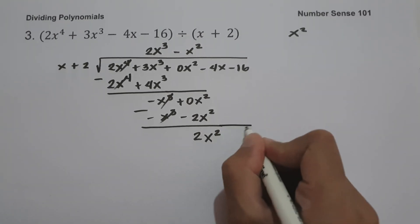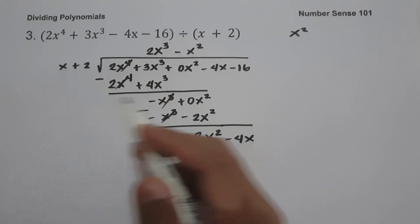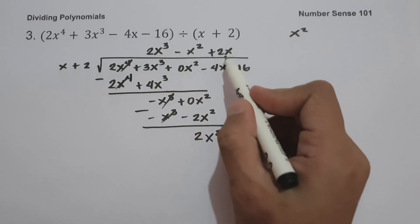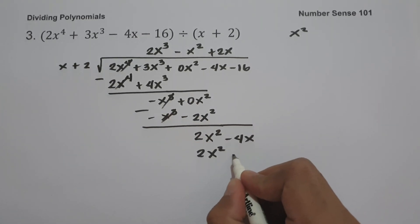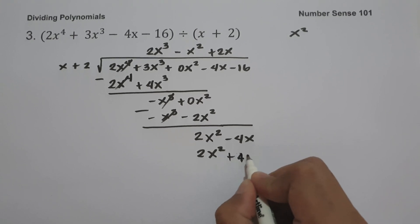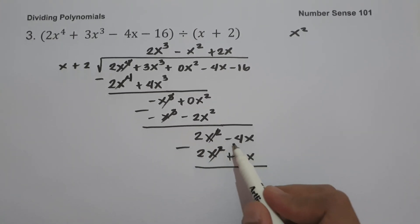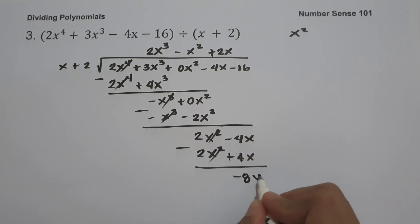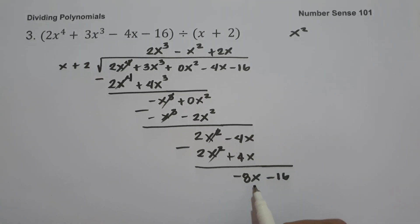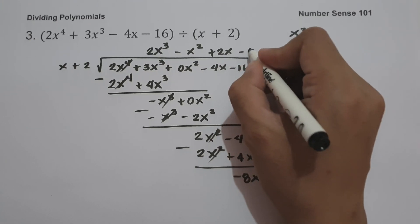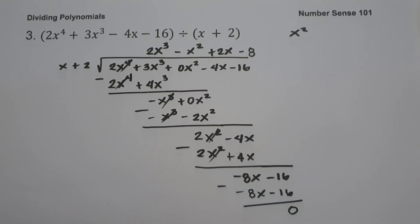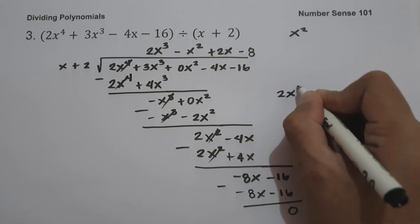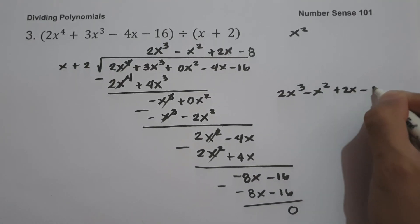Let us bring down negative 4x. Then 2x squared divided by x is 2x. After subtracting, negative 4x minus 4x gives us negative 8x. Let us bring down negative 16. Then negative 8x divided by x is negative 8. Negative 8 multiplied by x plus 2 gives us negative 8x minus 16. If we subtract this, we get 0. So our answer is 2x cubed minus x squared plus 2x minus 8.